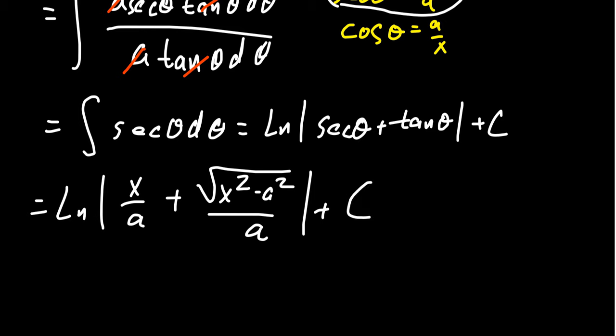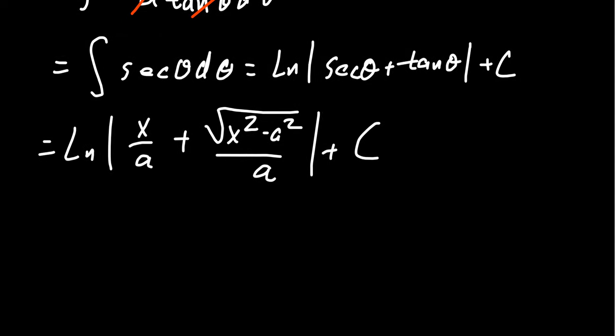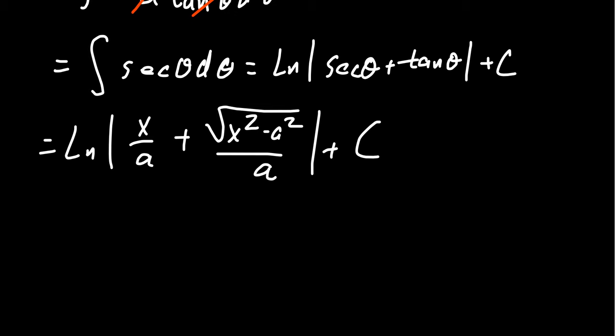Now, this is a perfectly good answer, but it turns out we can simplify it a little bit. And I want to demonstrate that to us because otherwise we might not have noticed it otherwise. So notice that both of these fractions have a common denominator of a, so let's add them together. Doing so gives us the natural log, the absolute value of x plus the square root of x squared minus a squared. This all sits above a.